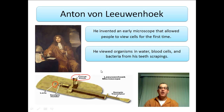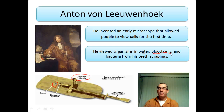Von Leeuwenhoek looked at many different things under his microscope. He looked at a drop of water and noticed tiny organisms swimming around — he wasn't sure what they were, so he coined the term "animalcules." He also looked at blood and saw it was made up of different kinds of cells, not just a red liquid. Then he took a sample from his teeth and saw very small organisms that were later found to be bacteria.